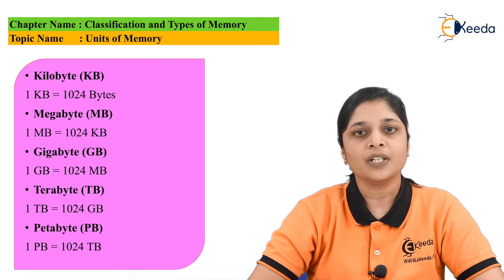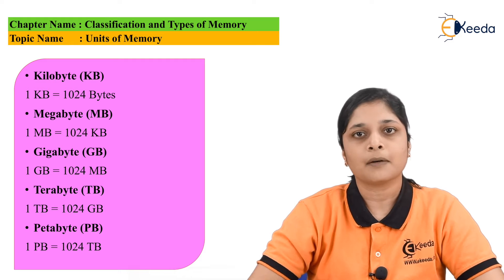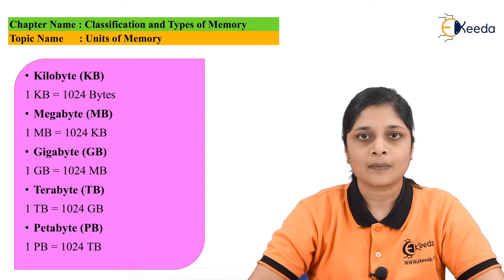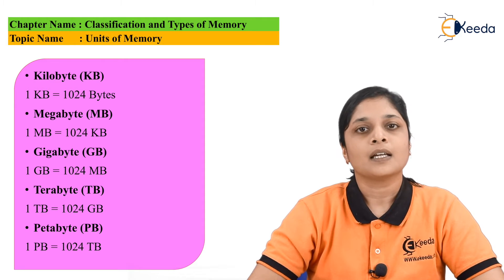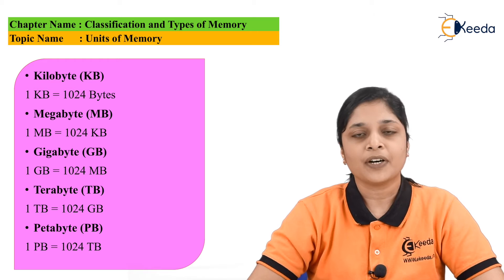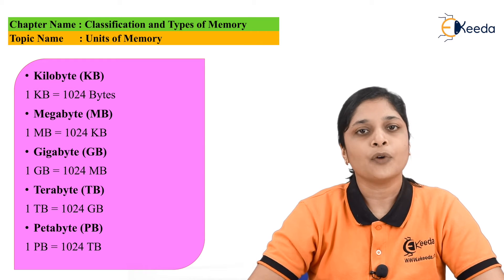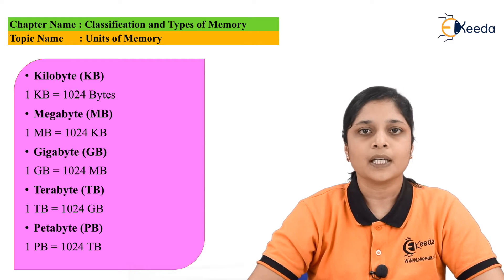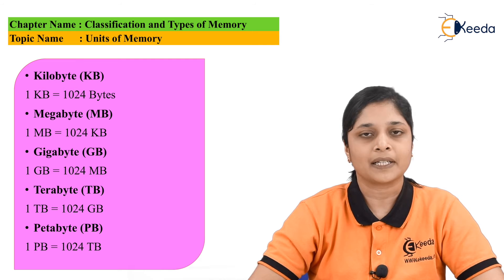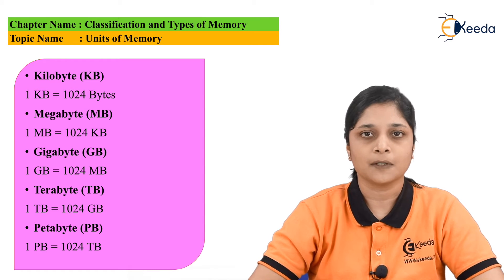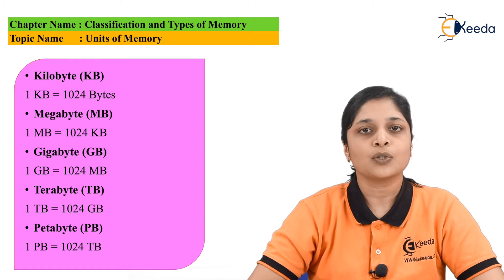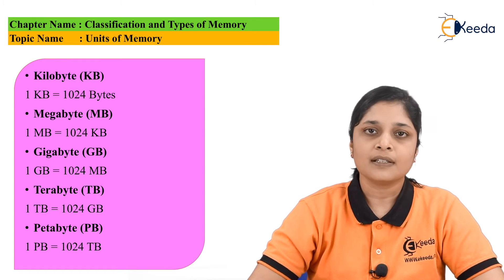One terabyte can be defined as 1024 gigabytes. After that, we have petabytes. One petabyte equals 1024 terabytes.